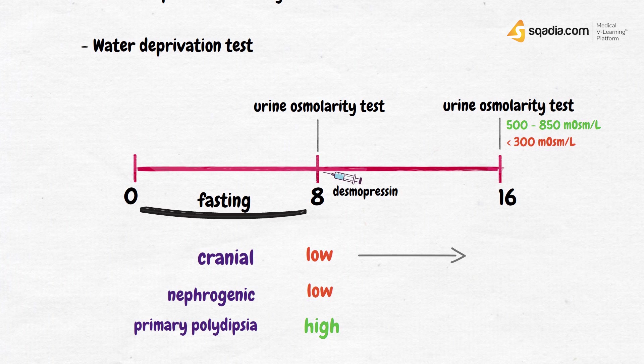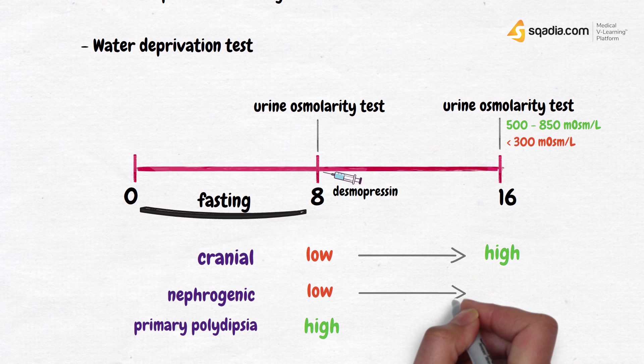So in cranial diabetes insipidus, the urine osmolality would become high. In nephrogenic diabetes insipidus, the urine osmolality would still be low, because the problem here isn't a lack of ADH, but the kidneys just won't respond to the ADH. So giving more ADH isn't going to make a difference.